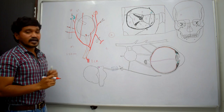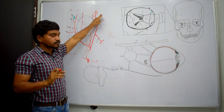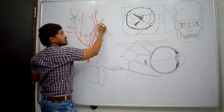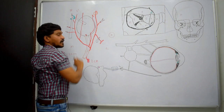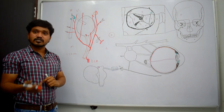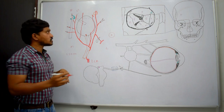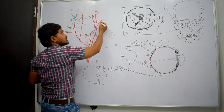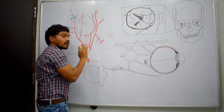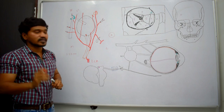The branches of the lacrimal artery include lateral palpebral branches. There is also the zygomatic artery, which divides into the zygomaticotemporal and zygomaticofacial branches. These two arteries pass through their corresponding foramina — the zygomaticofacial foramen and the zygomaticotemporal foramen.